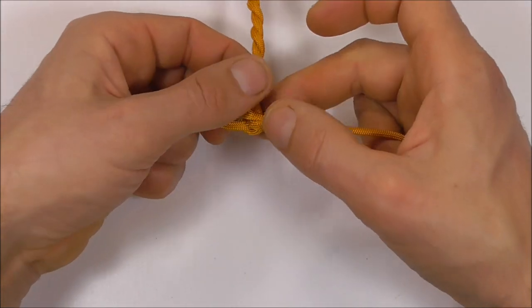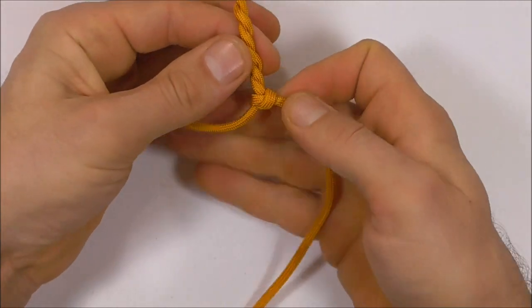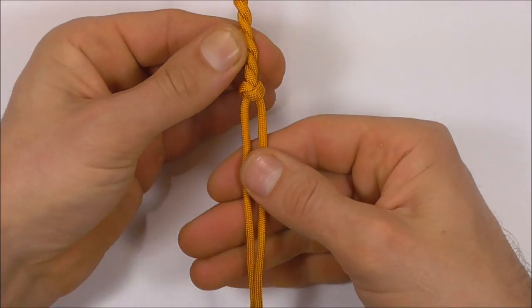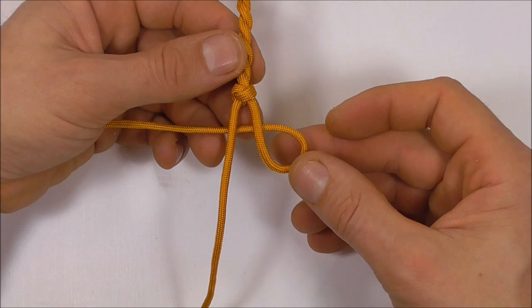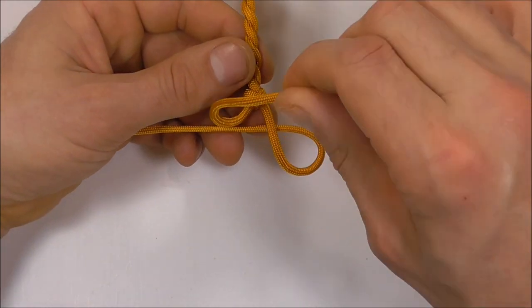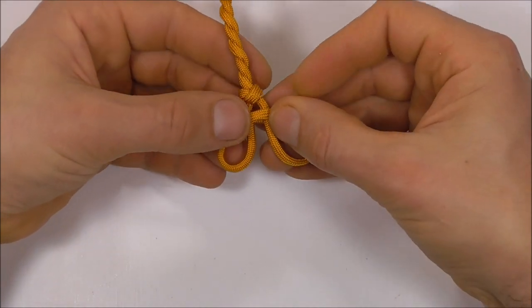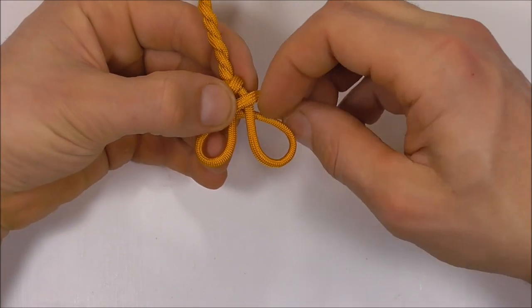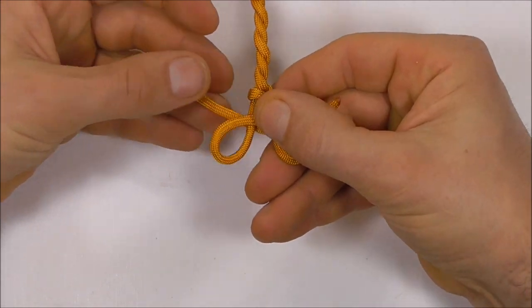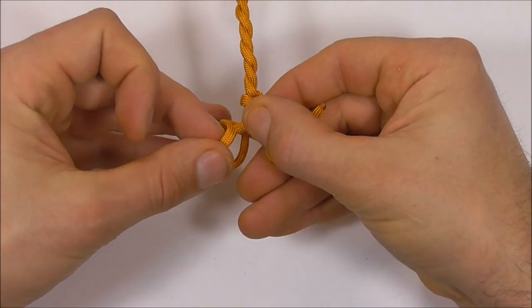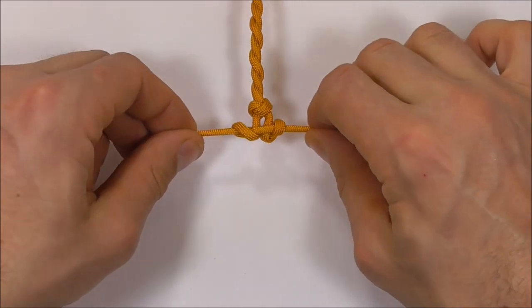Once we have tied this, the last thing we need to do is to tie a button. Take your right strand, form a loop and then with your left strand also form a loop. Take this right end, tuck it up through the right loop. The left end goes down through the left loop. Tighten up the button just by pulling outwards.